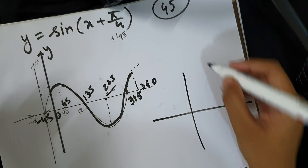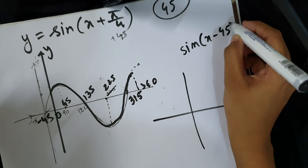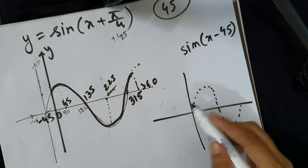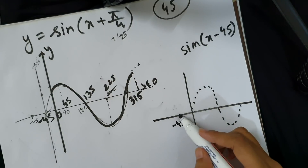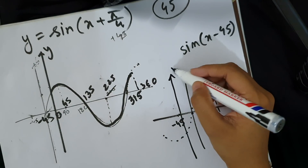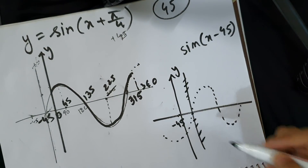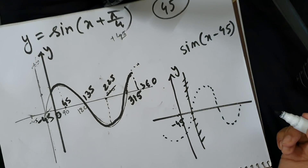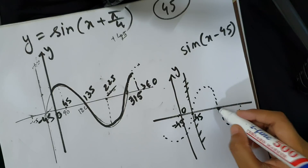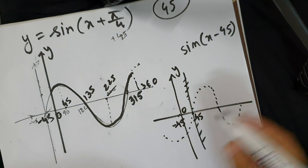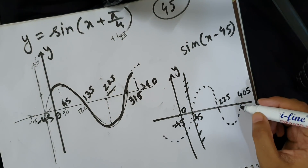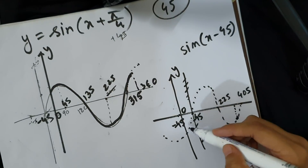Suppose y equals sin(x minus 45). That's how the graph changes — it is an initial graph right shift. The original key point values change: right shift means minus 45 is 0 on the y-axis. So 0 becomes 45, 180 becomes 225, 360 becomes 405 — a right shift of 45 degrees.